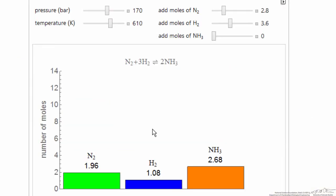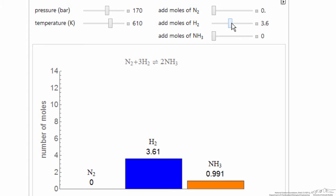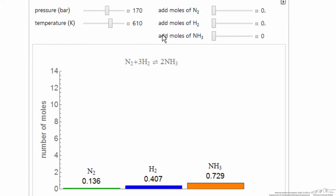So here's the simulation on the Wolfram site, and we can change the number of moles. When we first open, it's going to be conditions where one mole of ammonia is added to the system and it's allowed to go to equilibrium.